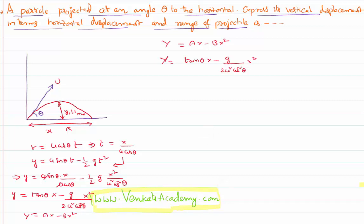I am just writing the same: y = ax - bx², that is tan θ × x - g / (2u² cos² θ) × x², where y is the displacement along y-axis, x is the displacement along x-axis.